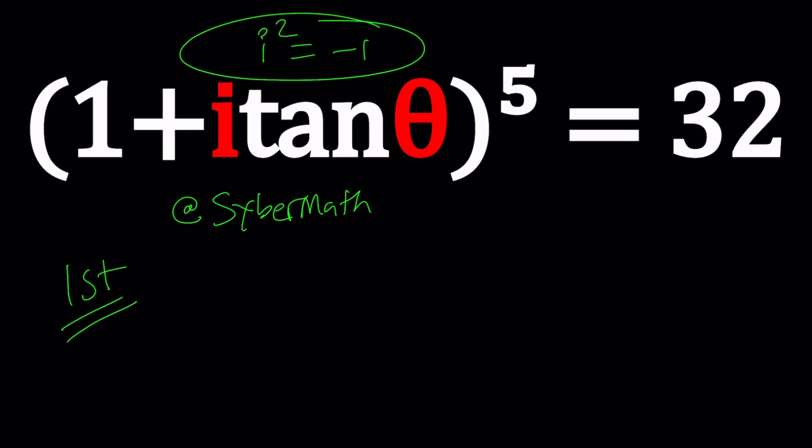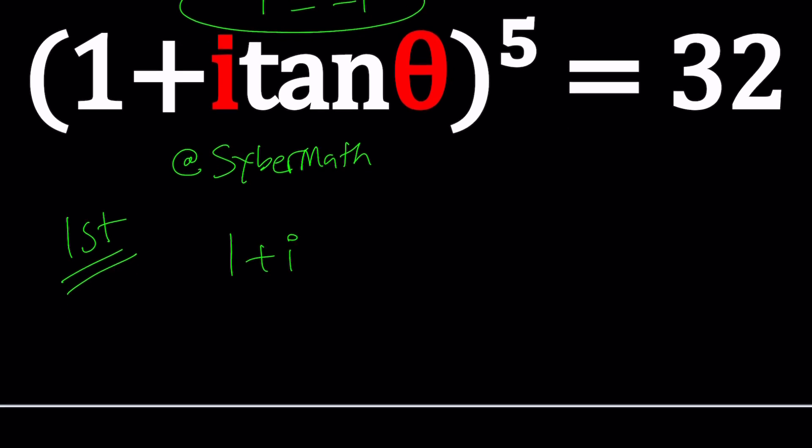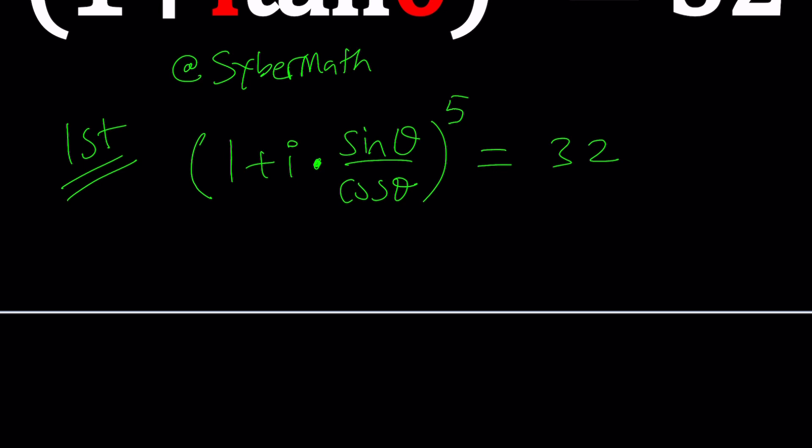For my first method, I'm going to write tangent theta as sine theta over cosine theta. That should always be true. By the way, theta can also be non-real complex, which is fine. But in that case, sine and cosine are not bound by one and negative one.